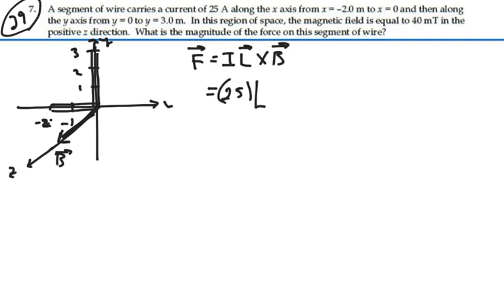Our length vector is going to be 2i plus 3j, because we're going first in the positive x direction, 2 units, and then the y direction, 3 units. And that's going to be crossed with the magnetic field, which is 40 millitesla, and it's all in the z direction, k.